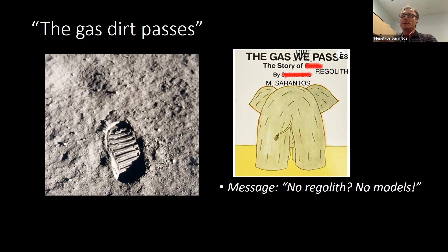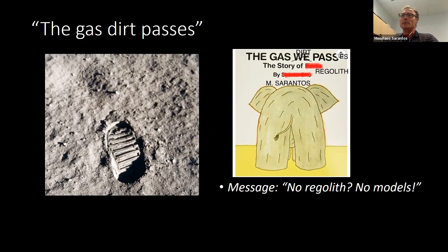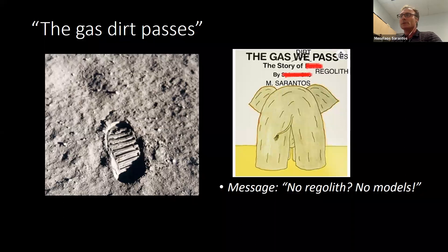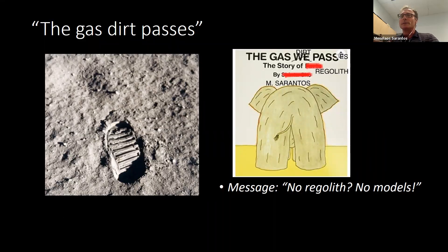I think we're children at heart. The main message — if I have to find a motive for this research topic that I've been working on for the last few years — is 'no regolith, no molecules,' in the sense that all the complexity, the interesting physics in this collisionless atmosphere enveloping the moon or Mercury or even icy bodies, takes place at the atom-surface interaction level.